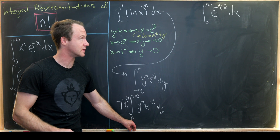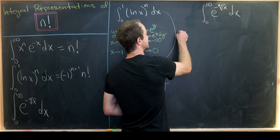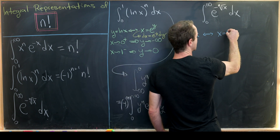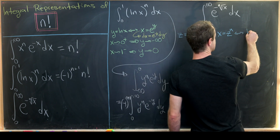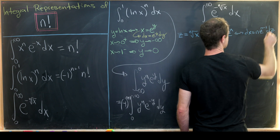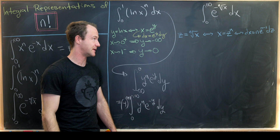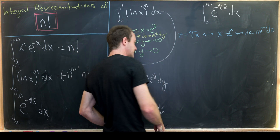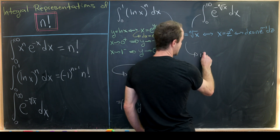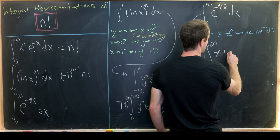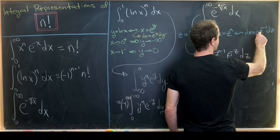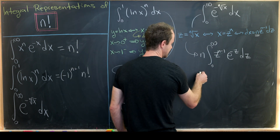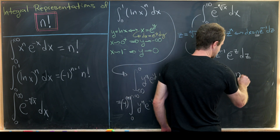For the last integral, let's substitute z equals the nth root of x. That means x equals z to the n, so dx equals n times z to the n minus one dz. Nothing changes with the bounds: when x is zero, z is zero; when x goes to infinity, z goes to infinity. The integral changes to n times the integral from zero to infinity of z to the n minus one, e to the minus z dz. Applying our earlier result, this collapses to n times n minus one factorial, which equals n factorial.